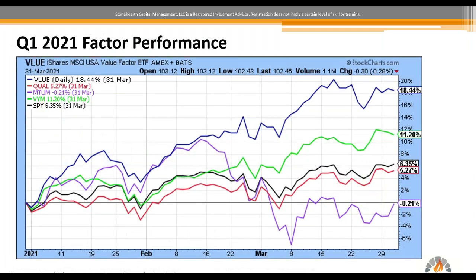Looking at the quarter through a factor lens — we do believe in factors. We have value factor, things trading cheaply compared to history; quality, think strong balance sheets and good management; momentum, things that have performed well in the past; and yield, returning cash to shareholders — we benchmark to the S&P 500. The factor lens really shows the value-to-growth rotation we saw at the end of 2020 continue into Q1 2021, with value up almost 19% in the quarter, while momentum — representing the growth trade — was basically flat to negative. So we really saw that value-to-growth rotation continue, and where you take risk in 2021 will be the biggest driver of returns.